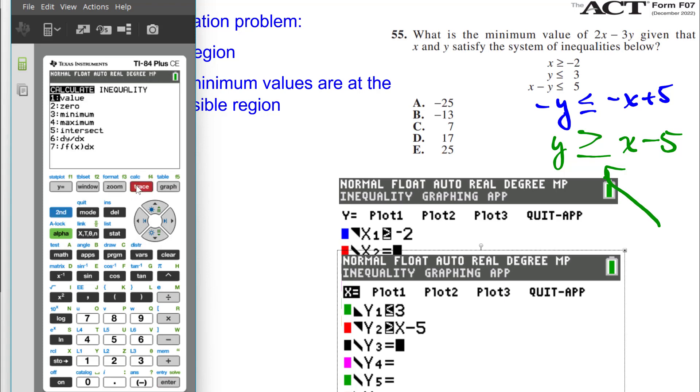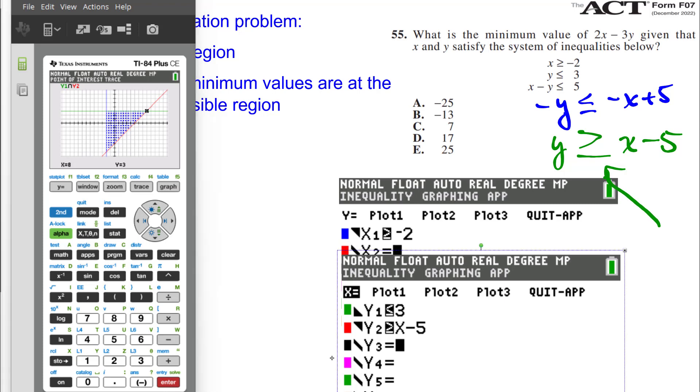So again, Second Calc, over to Inequality. And I can do number 1, Point of Interest Trace. So I'll press 1 or Enter. And let me record these, 8, 3. And then it looks like negative 2, 3. And then one more, negative 2, negative 7.